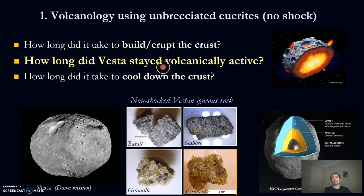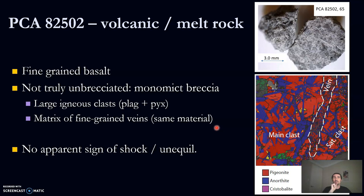Really, what I want to do is answer this question: how long did Vesta stay volcanically active — when was the last eruption? There are other rock types like metamorphic granulite, gabbros, and pyroxenite, but those address cooling. The best rock for dating eruptions is a basalt, so we found one. There are not that many — most rocks are kind of gabbroic — but we found one, and this one is very fine-grained.